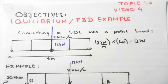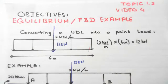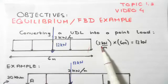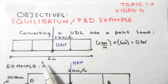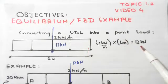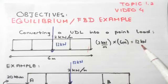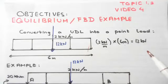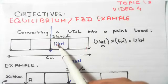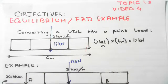To convert the UDL into a point load, we simply multiply the UDL by its span. So we do two kilonewtons per meter times six meters — the units cancel — and we end up with 12 kilonewtons. Since we've converted this UDL into a point load, the point load lies exactly in the center of the UDL and is equal to 12 kilonewtons.